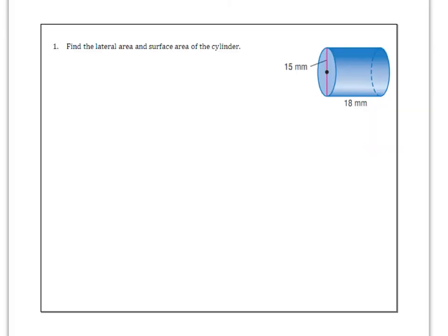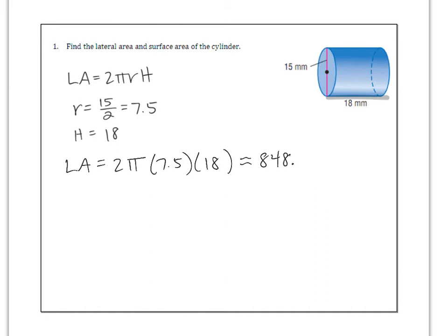Number one, find the lateral area and surface area of the cylinder. Lateral area is 2πrh. So let's go through and find our values. The radius is halfway across the circle. When they draw in the full red line going all the way across the circle, that means the diameter is 15. So this is going to be 15 divided by 2 or 7.5 is the radius. The height of this cylinder is 18. It goes sideways because it's laying on its side. So lateral area is 2 times π times 7.5 times 18. Make sure you're using the π button and you should get approximately 848.23 millimeters squared. That's your lateral area.